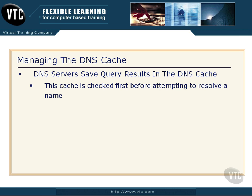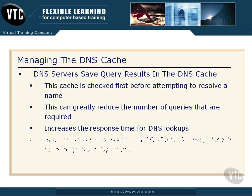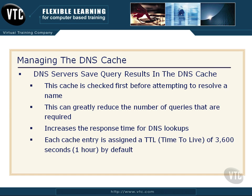Every time that you try to utilize DNS, it checks that cache first, basically to say, have I done this in the last few minutes? Because if I have, there's no point in redoing all this — I'll just check the cache to resolve the name. This can greatly reduce the number of queries that are required, it can increase the response time for DNS lookups, and it makes everybody happy.